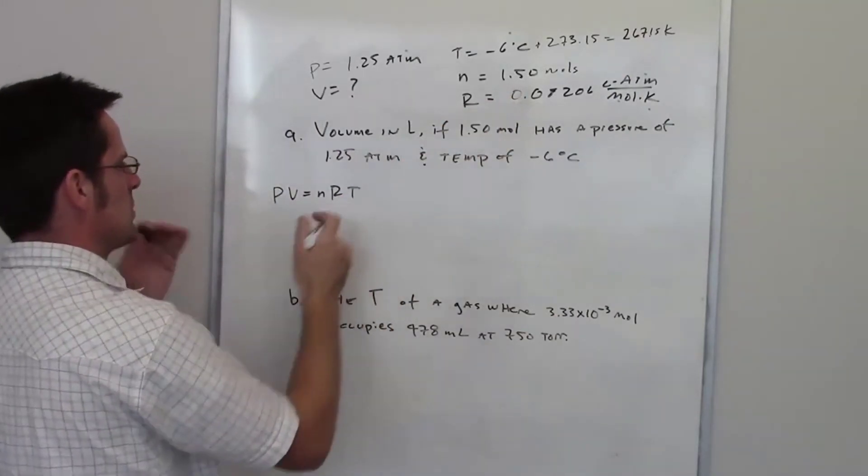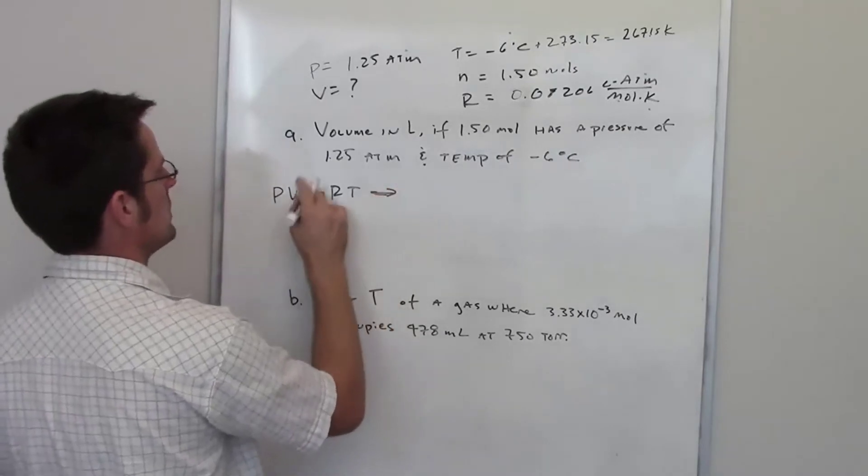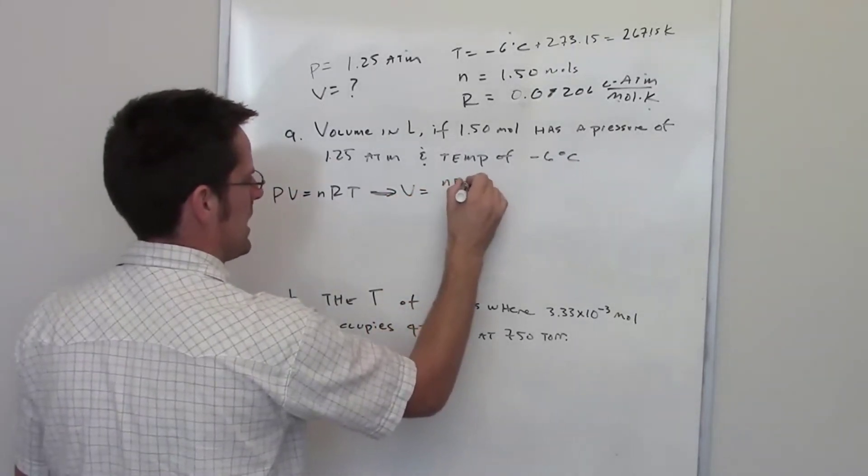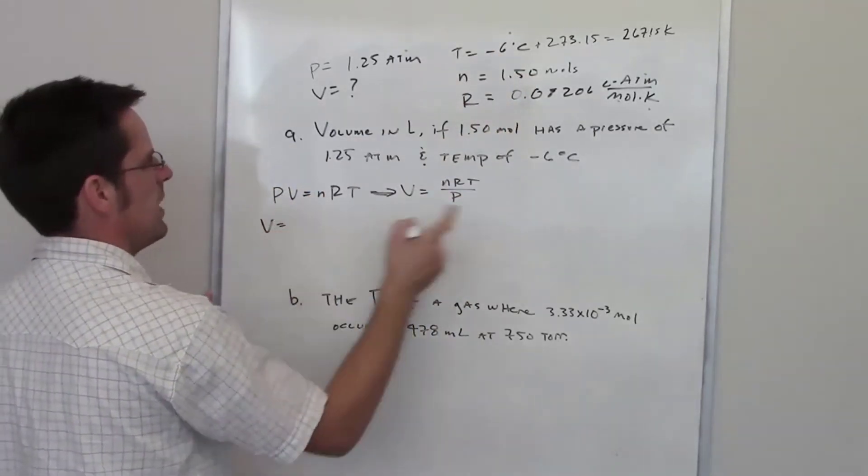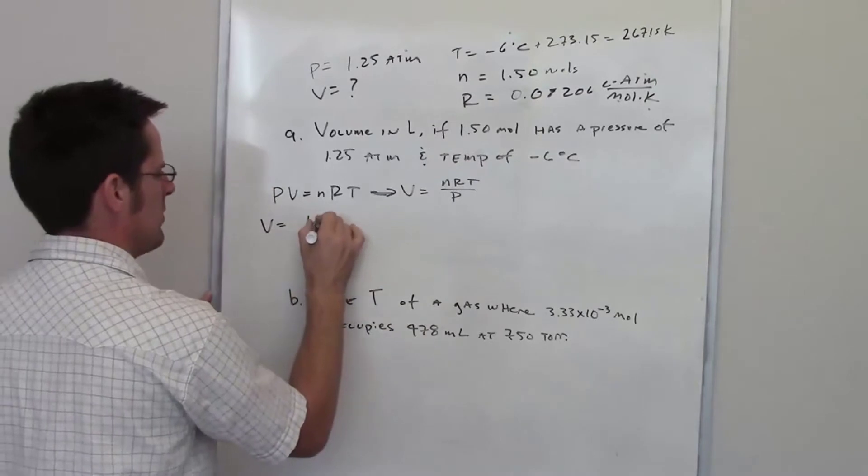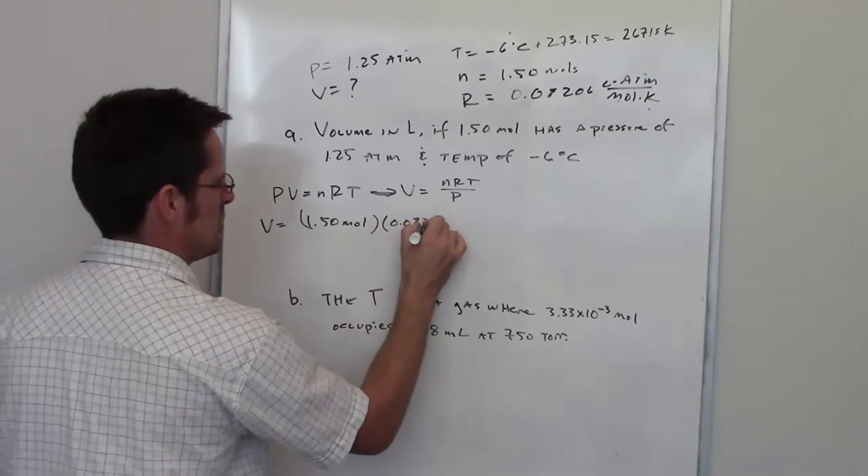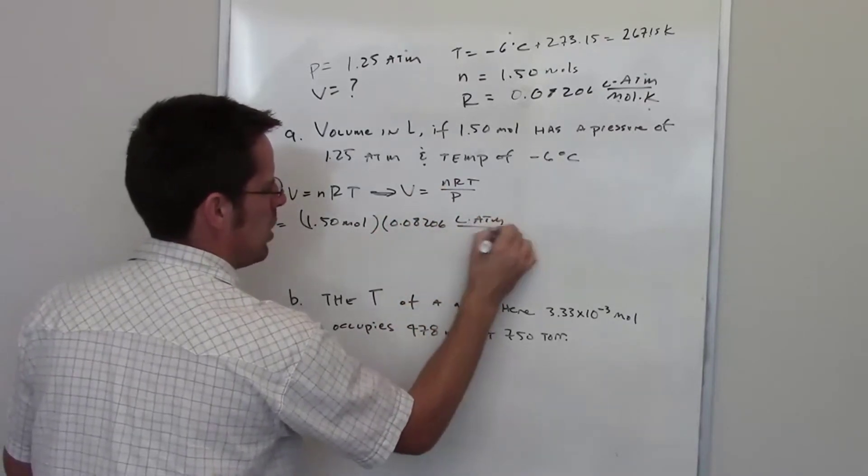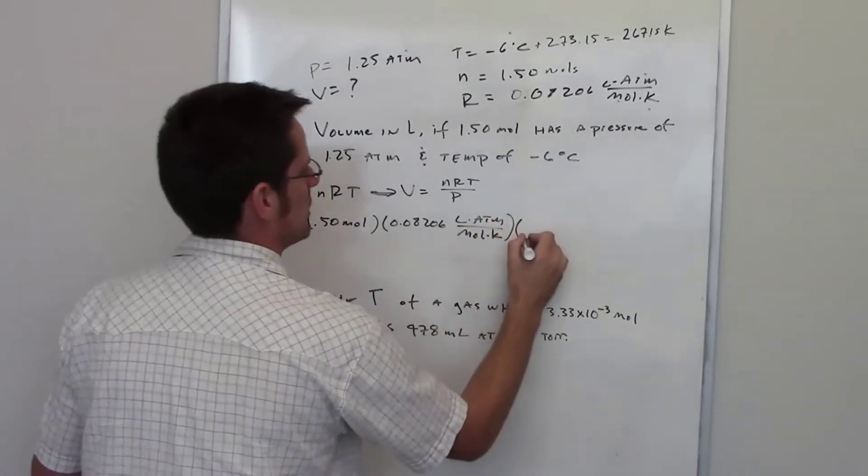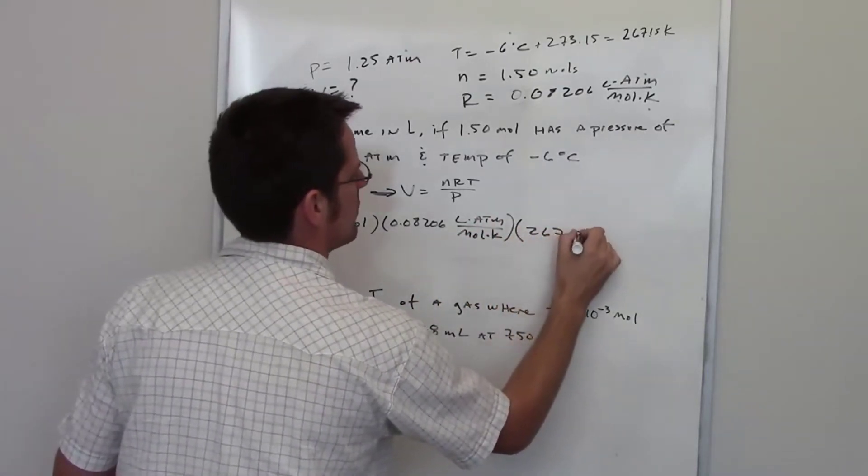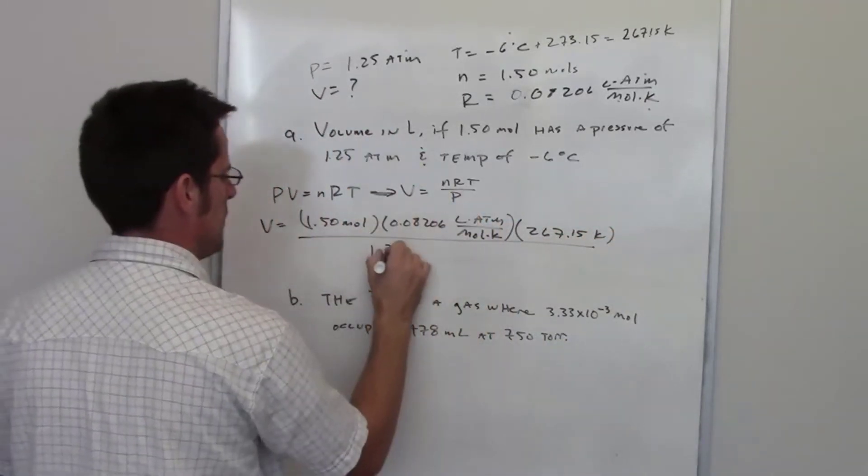Now, all I have to do is just isolate using the magic of algebra the quantity that I'm trying to determine, which is V, and put everything else on the other side. V equals nRT divided by P. Now, I just place all of these different values in their locations. 1.50 moles for n. R is going to be 0.08206 liter atmospheres per molk. I never get tired of laughing at my own joke there. Temperature is 267.15 Kelvins, and pressure is equal to 1.25 atmospheres.